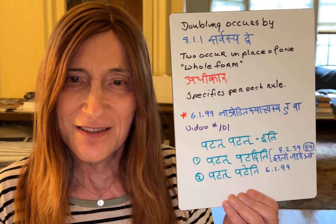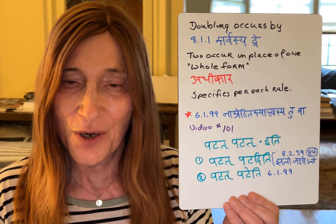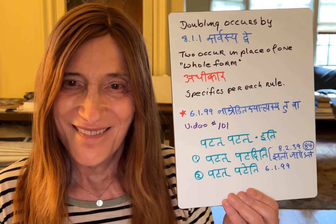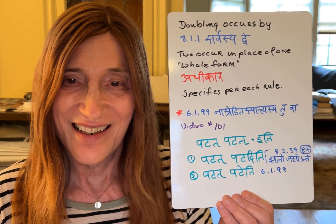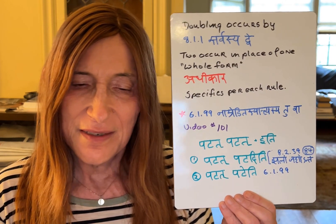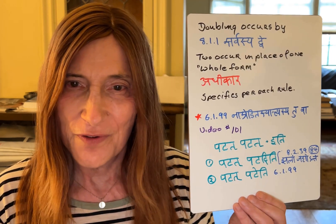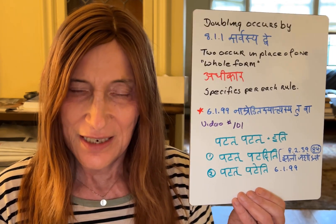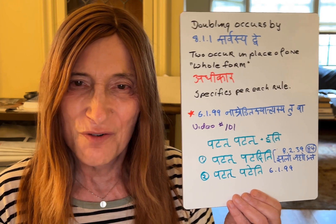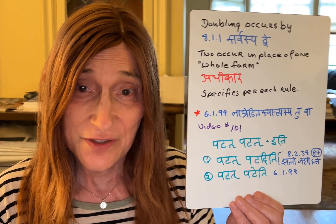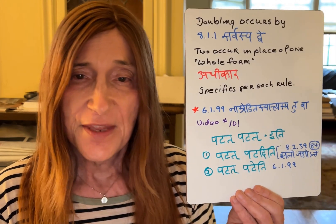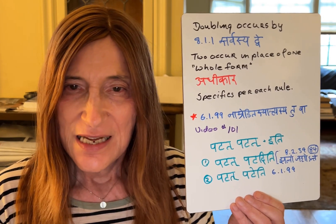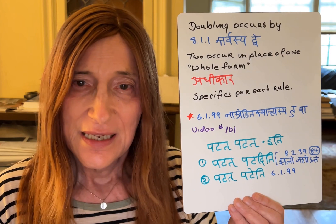That sutra 'na amredita syantya sya tuva' obviously doesn't make a lot of sense if we don't know what an amredita is. But now we do, and we have that sanya that we need. That sutra had to do with a sequence of pararupa adesha that is refined to a particular point with this current sutra.